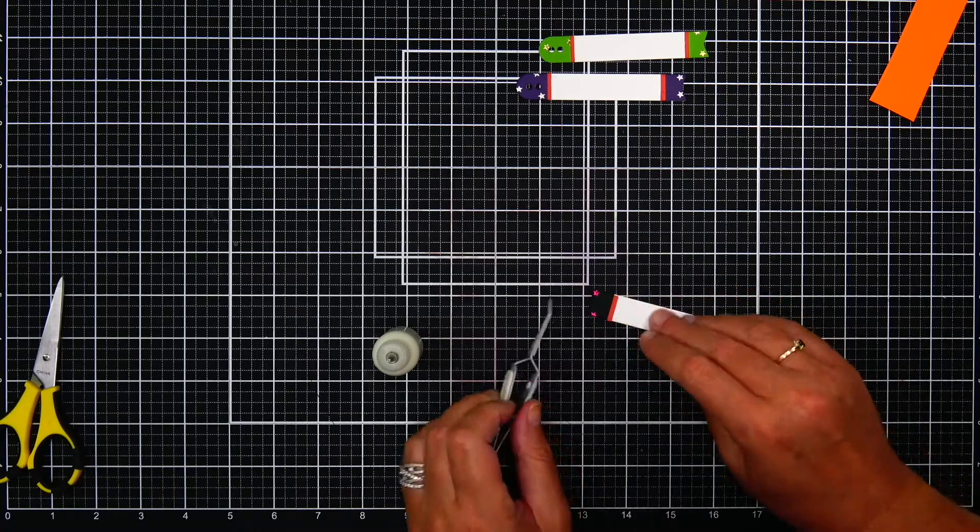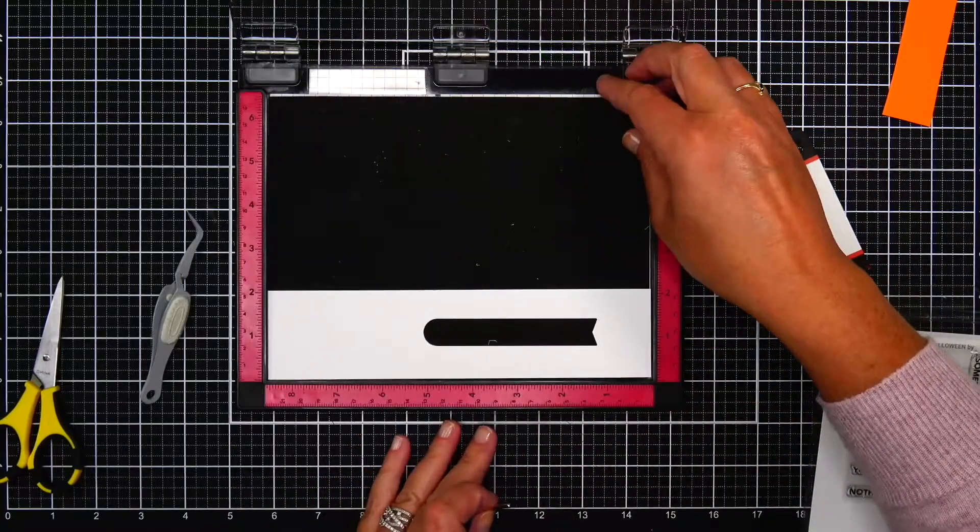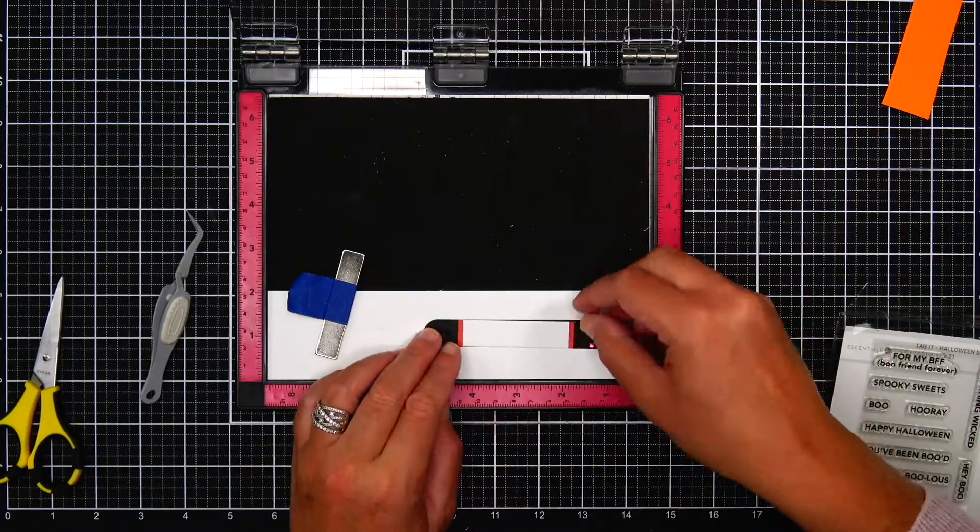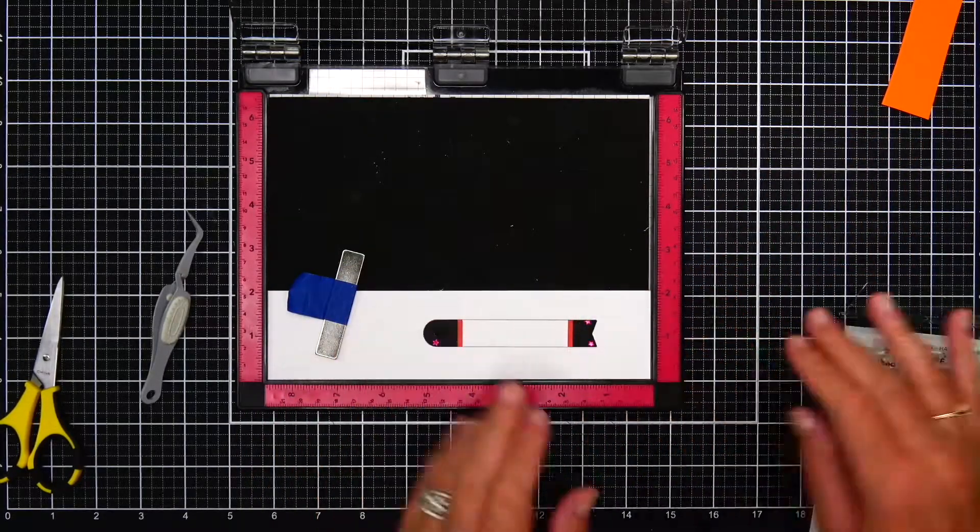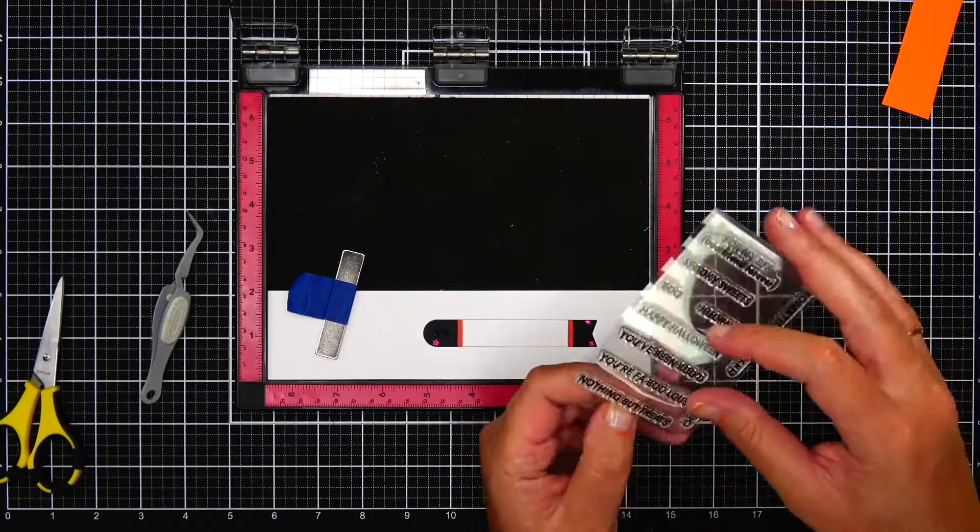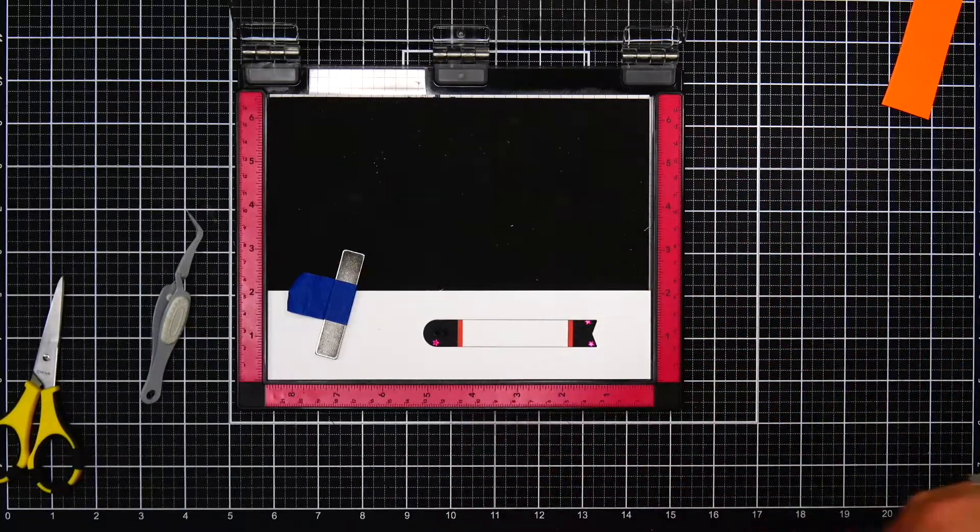Then I'm going to use a negative from one of the white tags. I'm going to put that in my Misti, and then I'm going to put each tag back into that negative space and be able to stamp the sentiment onto the tag in the same position for each tag.